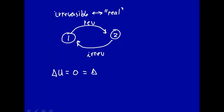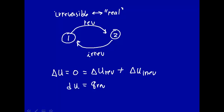That will be the sum of the reversible delta U for the reversible process plus the delta U for the irreversible process. Let's rewrite that using the infinitesimal form: dq reversible plus dw reversible — that's from the first law of thermodynamics — plus dq irreversible plus dw irreversible.